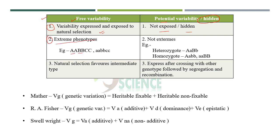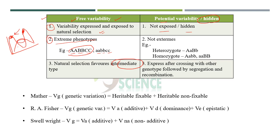Free variability refers to those extreme phenotypes — such as AABBCC or aabbcc — which are the extreme phenotypes. If we put them in a graph, they will appear at the extremes. Those extreme phenotypes which are available for selection are called free variability. However, natural selection favors the intermediate individuals, so these extreme types will not be favored by nature.